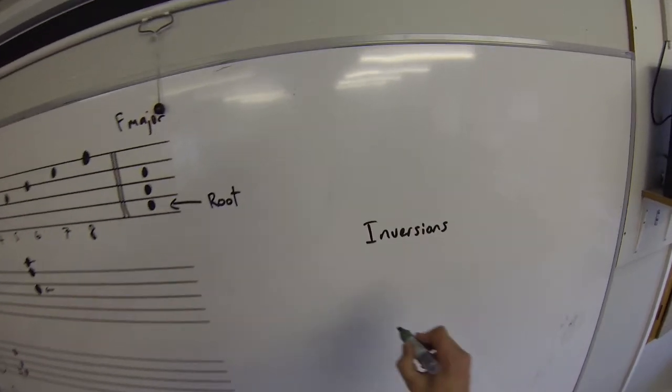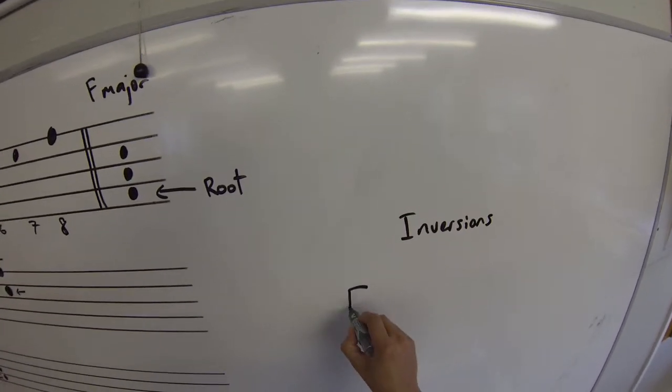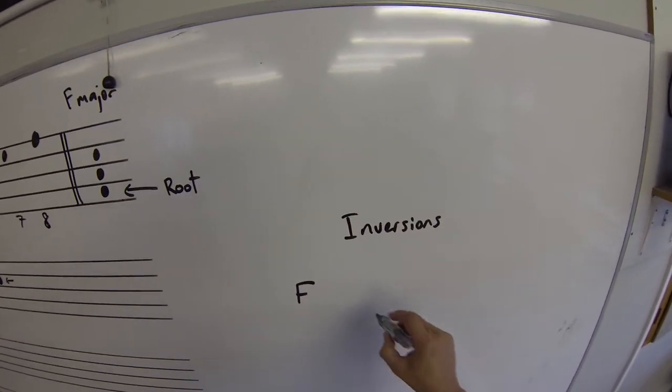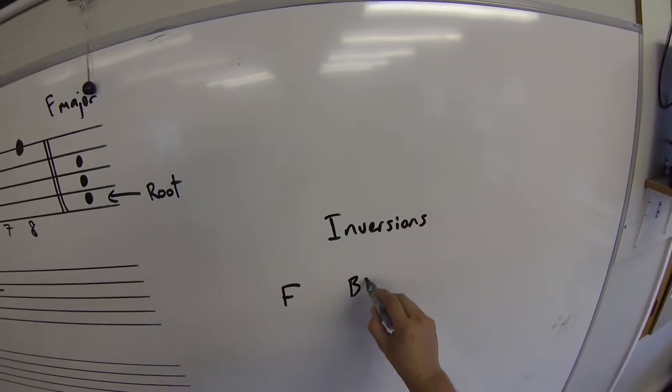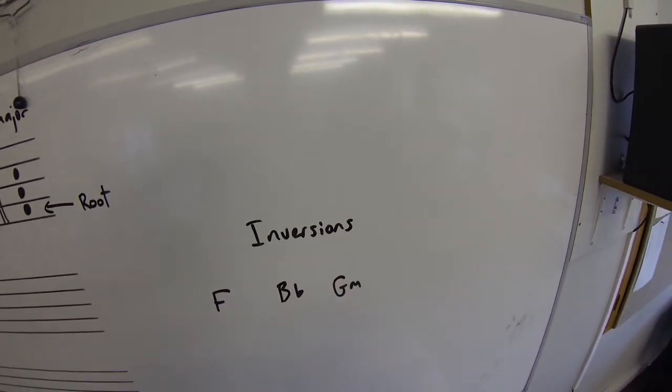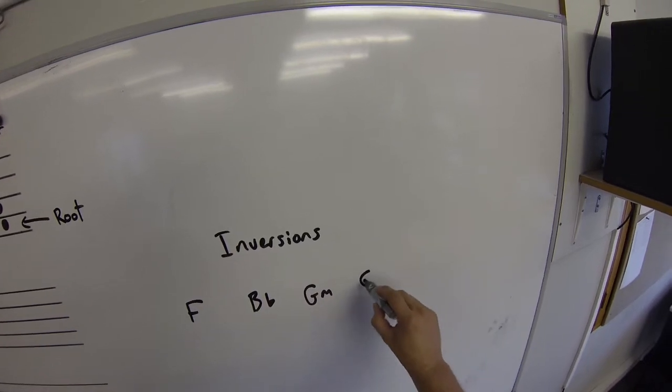If you look online and see some chord charts, you'll see quite often chord markings like this: maybe F, B flat, G minor, E flat.